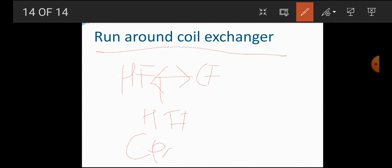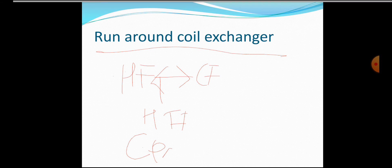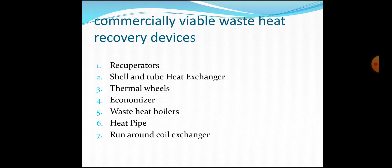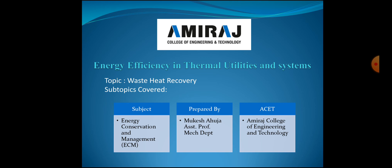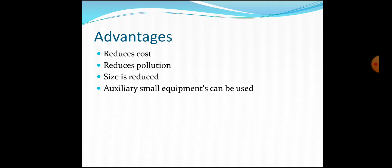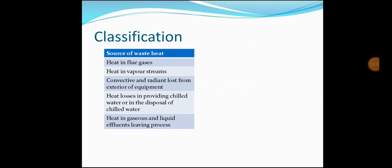From the next lecture we will see cogeneration. To revise, under waste heat recovery we have seen that the advantages include reduced cost, reduced pollution, and reduced equipment size. We have also seen the classification of waste heat sources — from flue gases, vapor streams, convective gradient losses from exterior equipment, heat losses in providing chilled water, and heat in gaseous, liquid, and other effluents leaving a process.